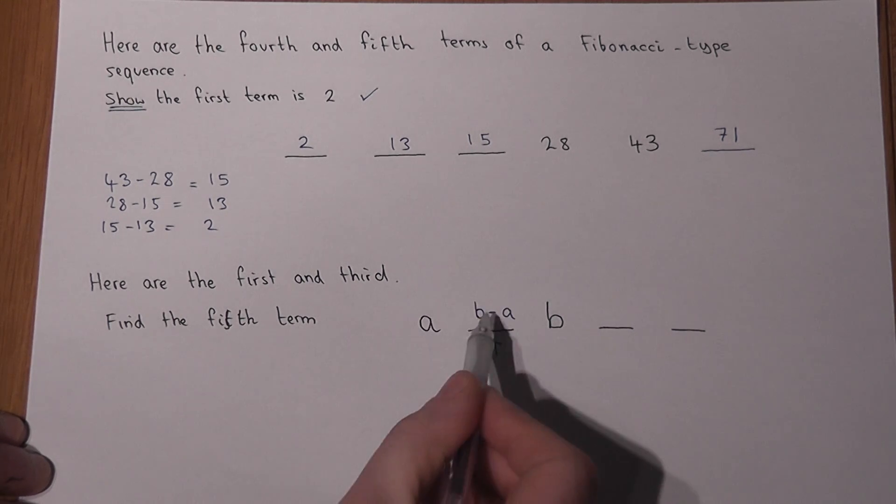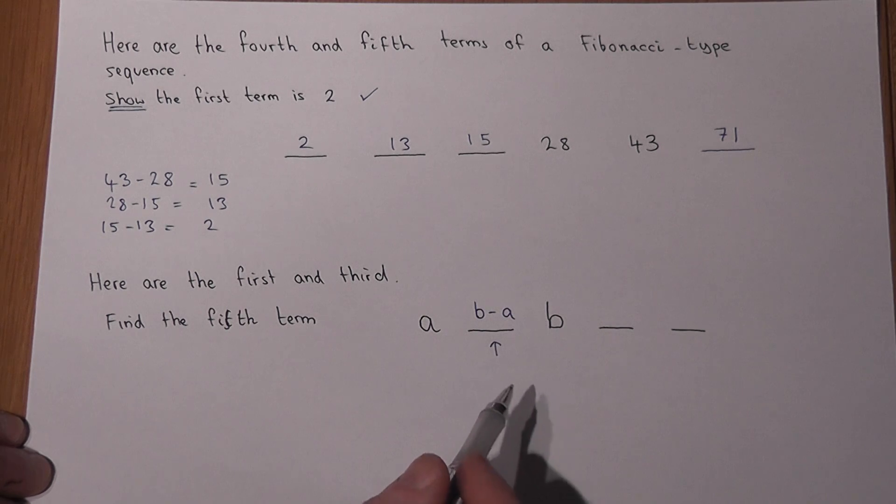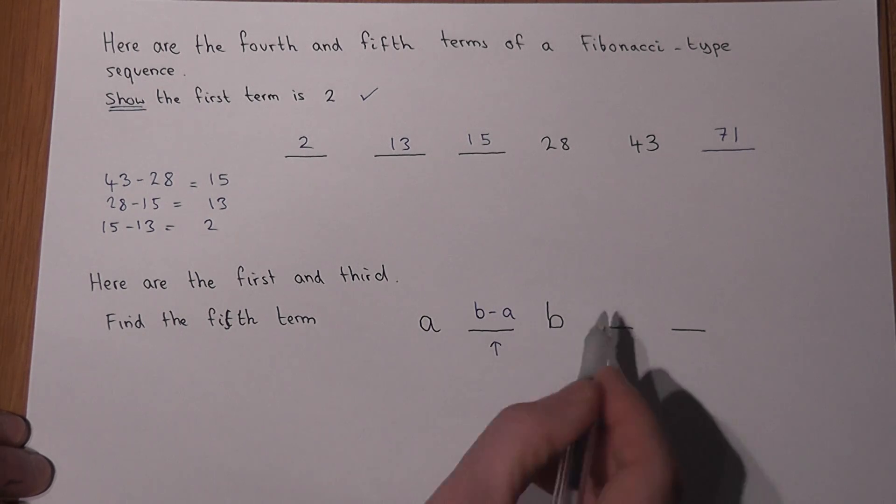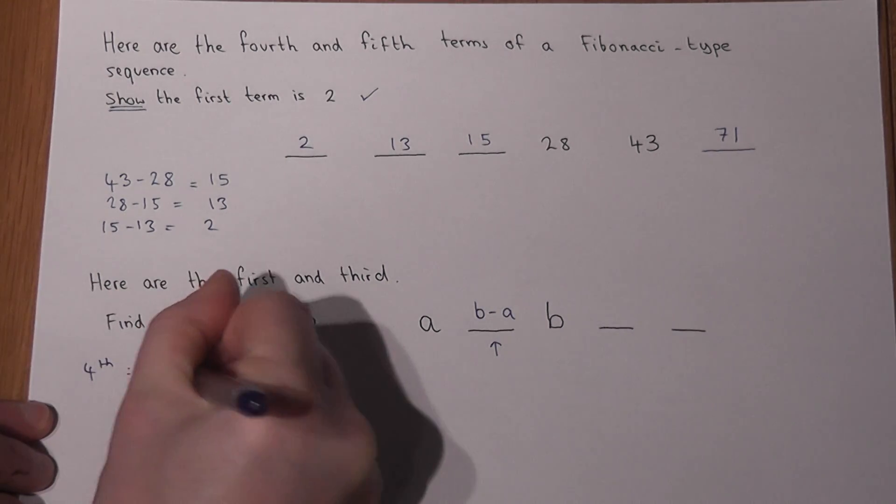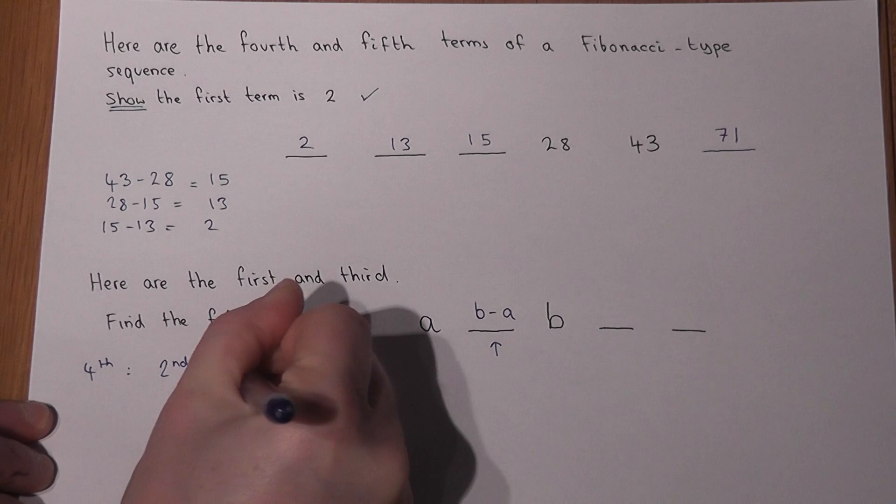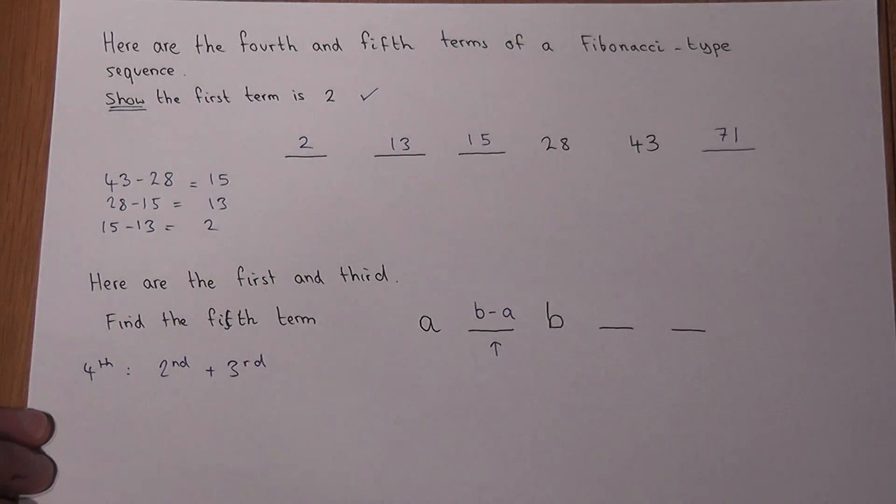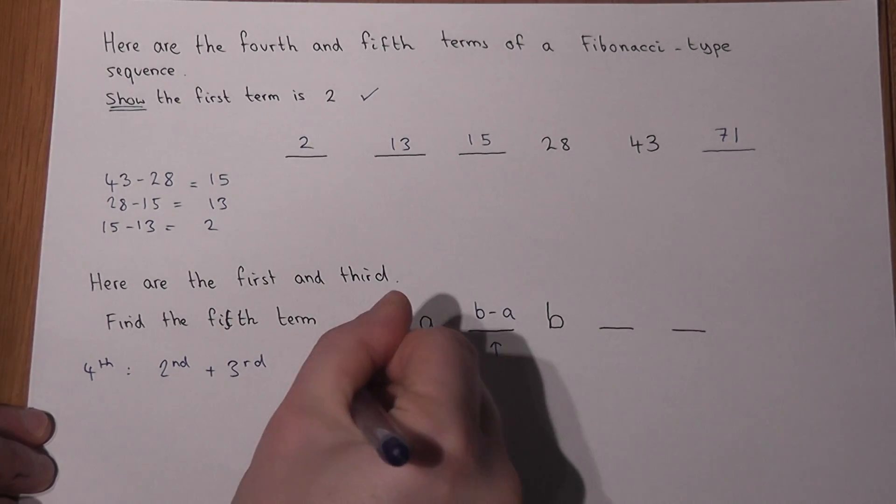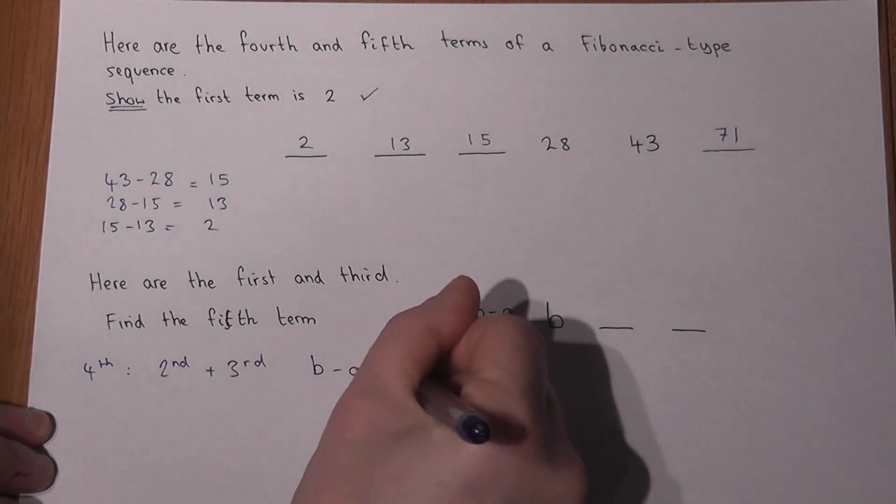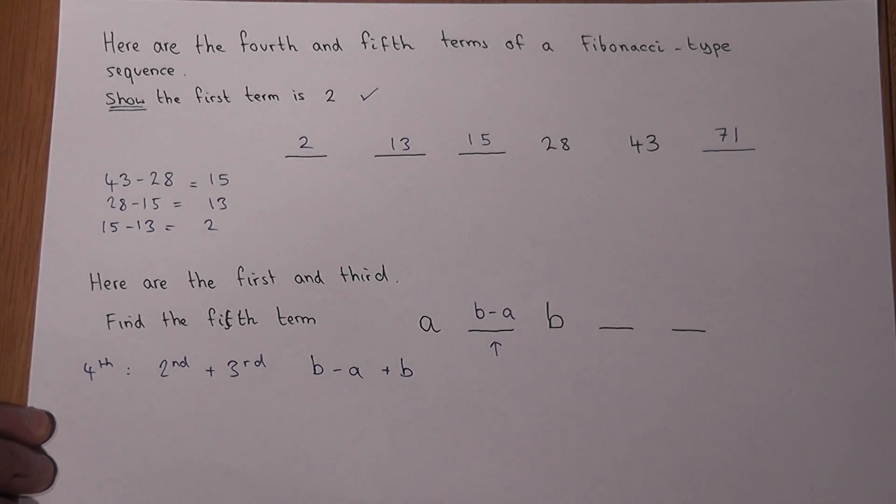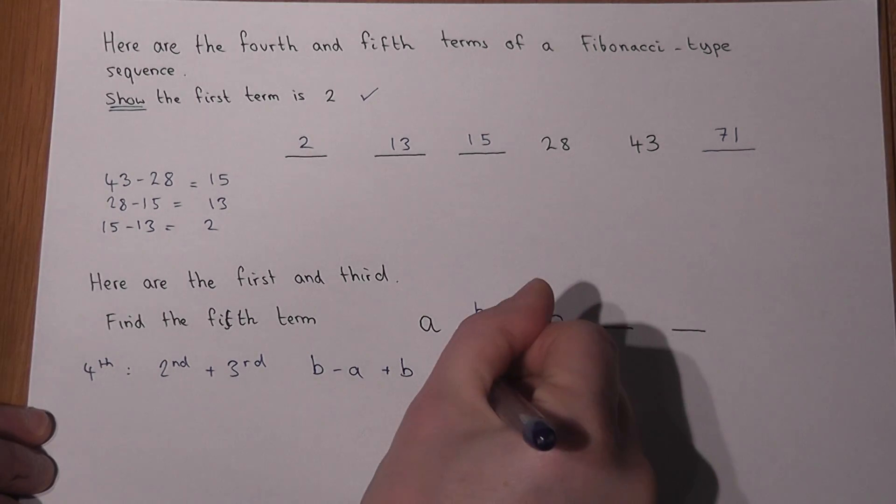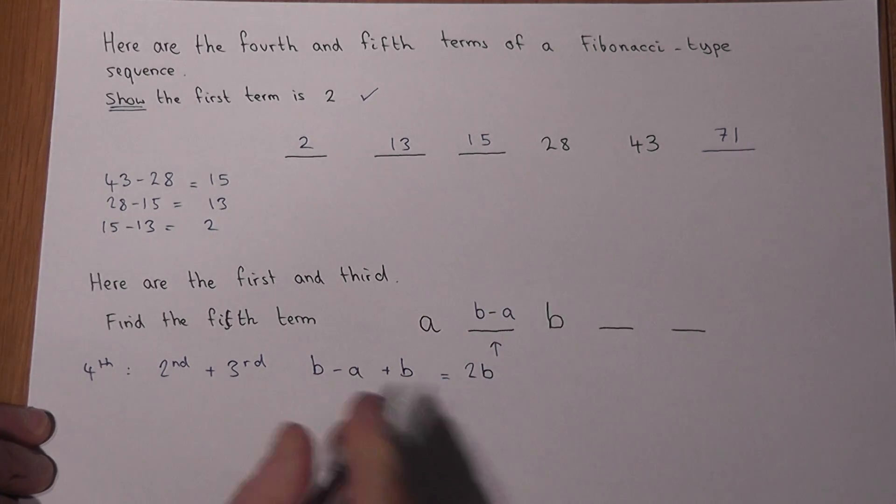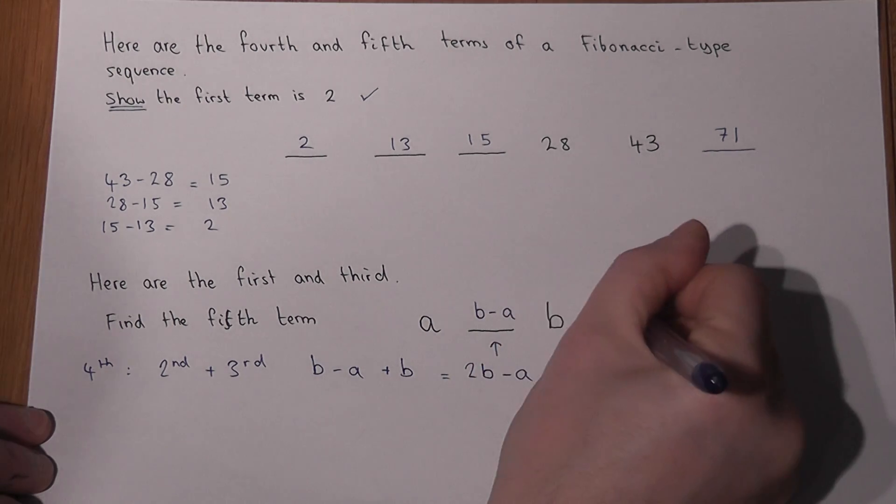We now know the first, the second, and the third. We can now use the Fibonacci idea to find the fourth, because to find the fourth term I just do the second plus the third. Well, the second is B minus A. The third is just B. If I then simplify this expression, B plus B is 2B, and there's a minus A there as well. So this becomes 2B minus A.